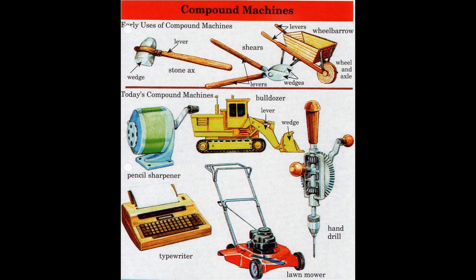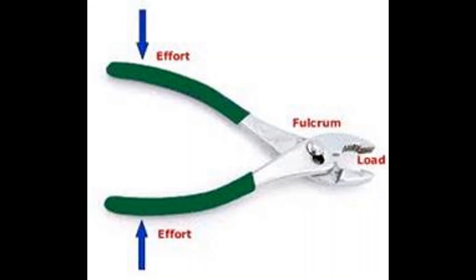Here we have examples of some different compound machines. We have a stone axe, which has two parts: a wedge and a lever. We have shears — you can see the levers, the part that you hold, and the wedge which is the cutting part. Then the wheelbarrow is also an example of a compound machine — it has a wheel and axle and levers, which are the handles that you hold.